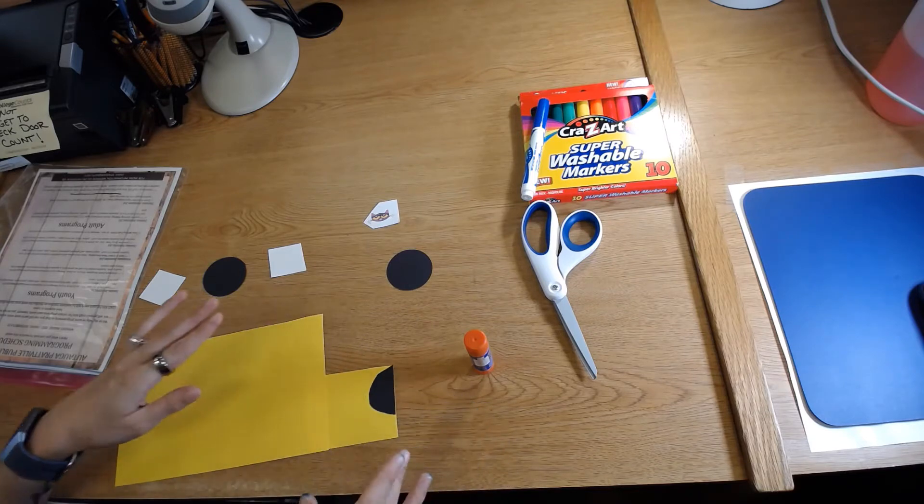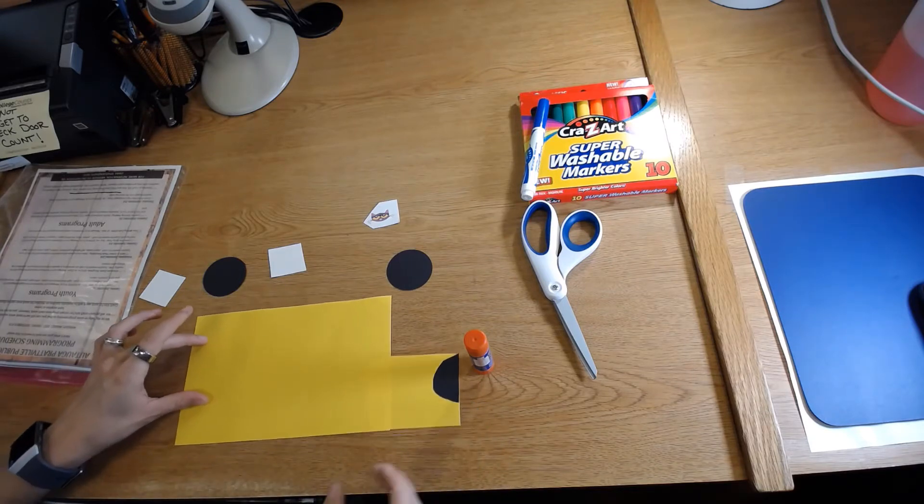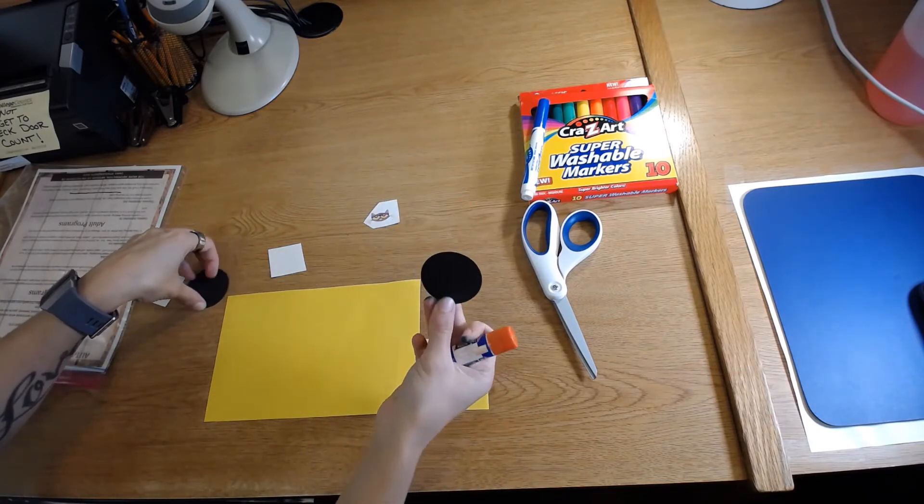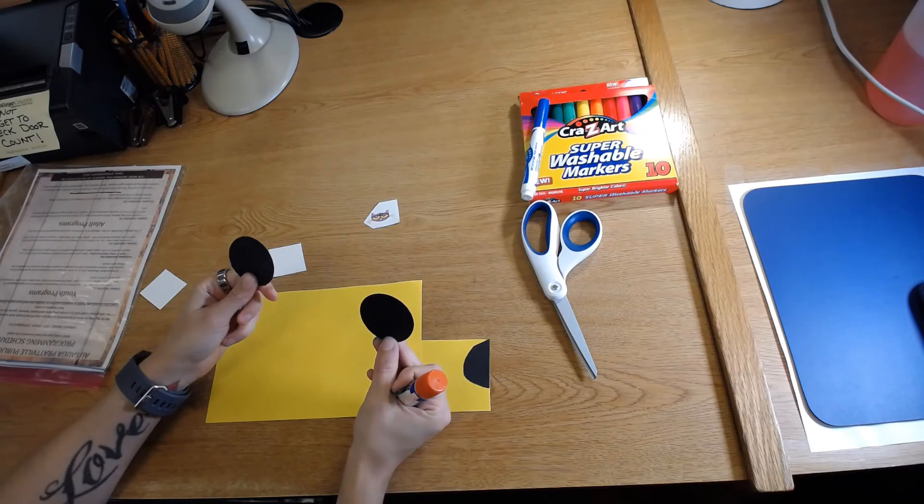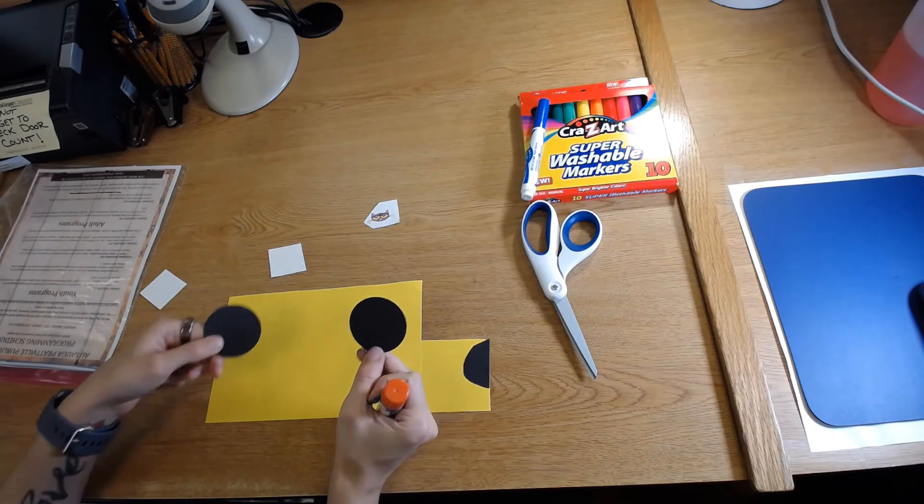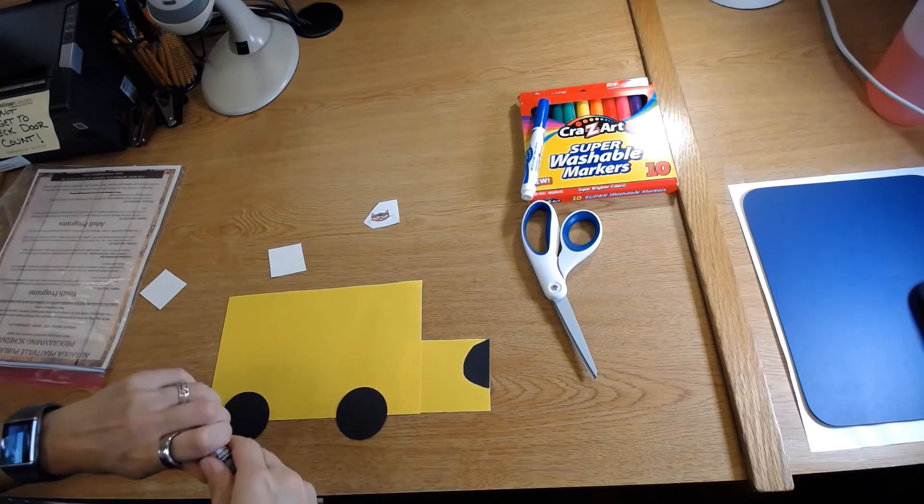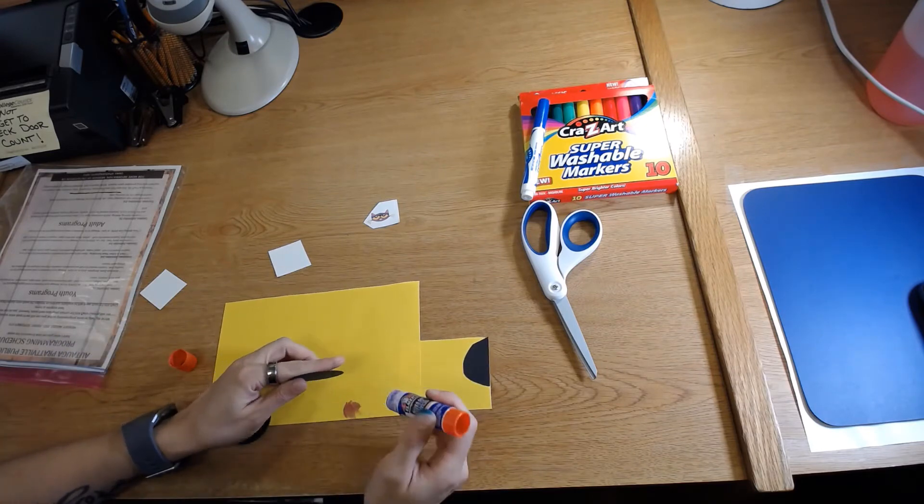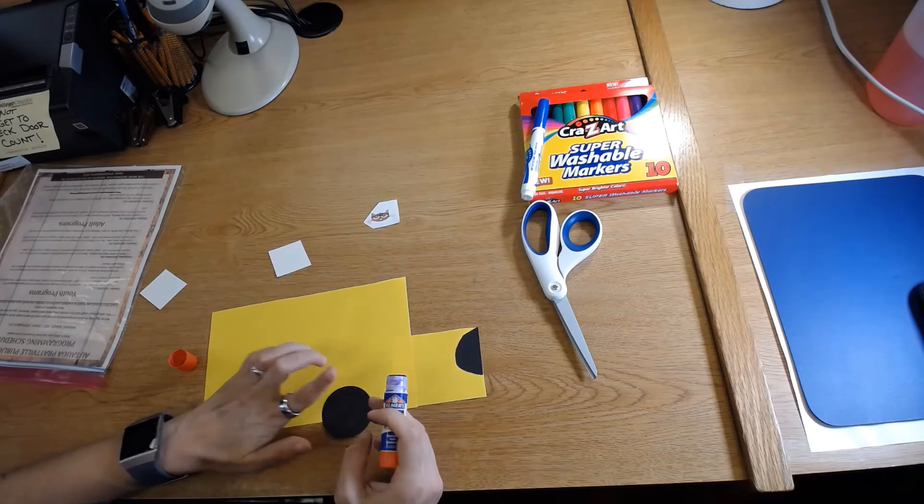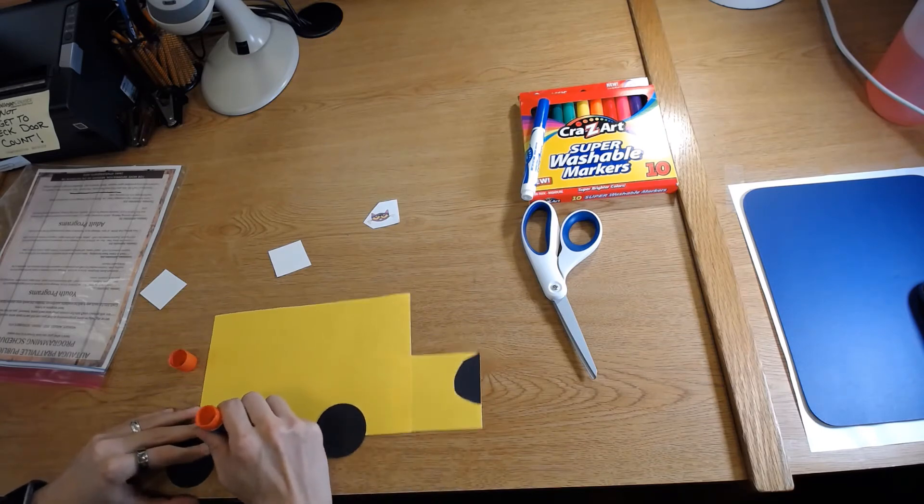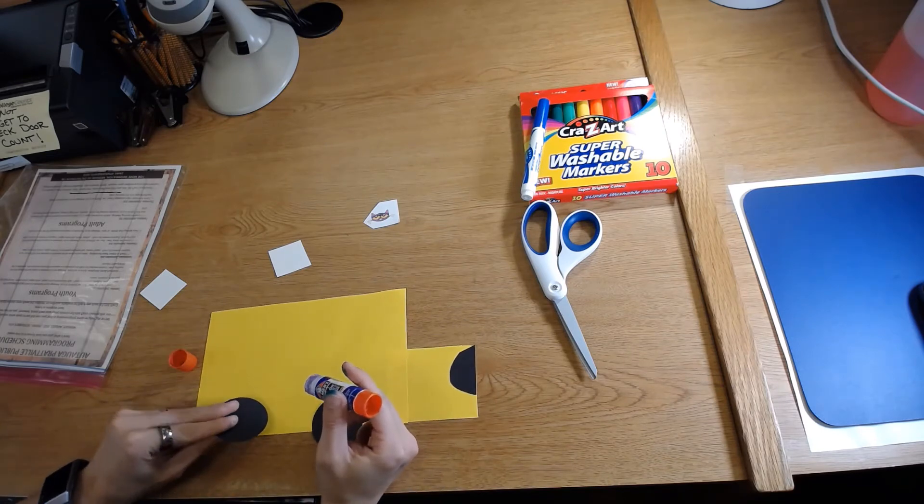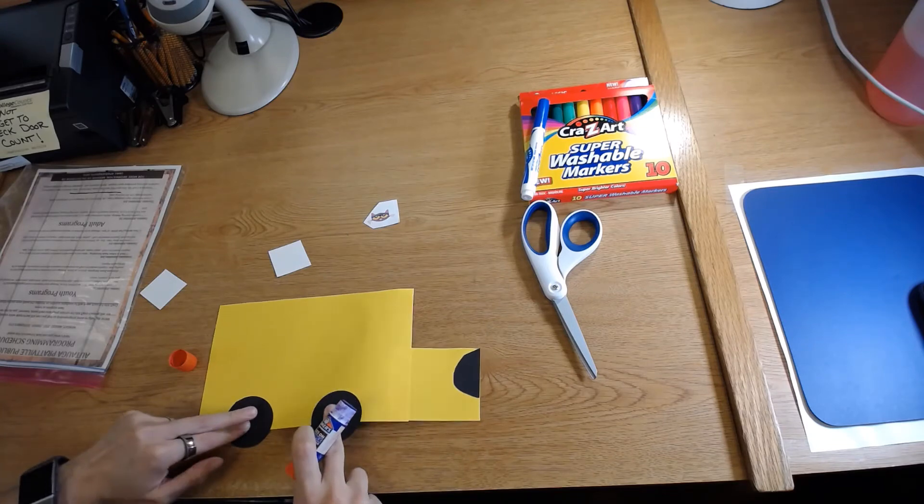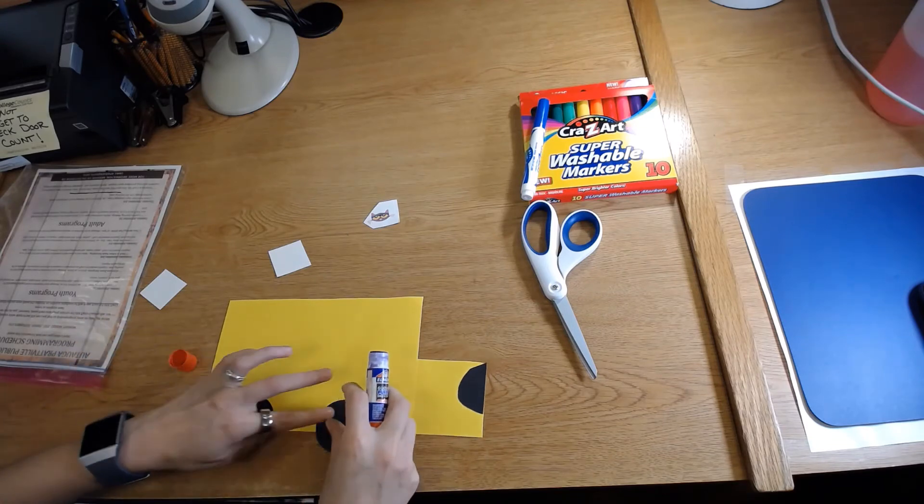And then we're going to glue our circles. Can you guess what these are for? Yeah, they're the wheels. So we're going to put our wheels on the bottom of the bus. You could put your wheels on the top of the bus, but I don't think it would get very far. Awesome! We got our wheels, the wheels on the bus.